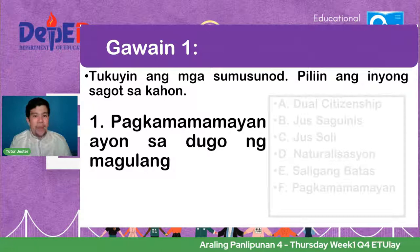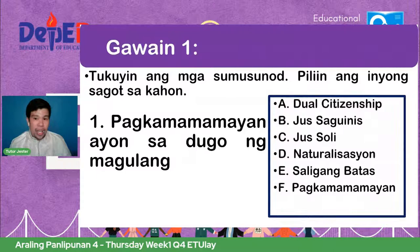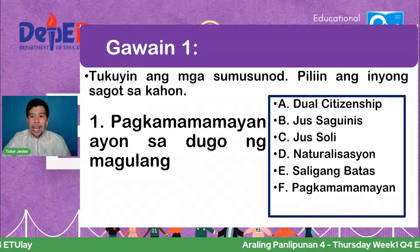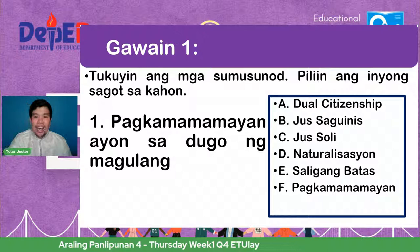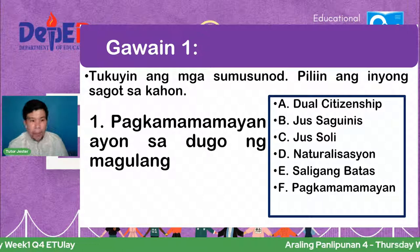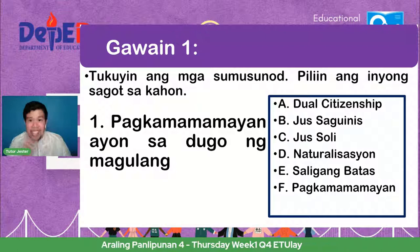Gawain 1: Tukuyin ang mga sumusunod. Piliin ang inyong sagot sa kahon. Ang ating mga pagpipilian ay: A — dual citizenship; B — jus sanguinis; C — jus soli; D — naturalisasyon; E — saligang batas; F — pagkamamamayan. Number one: pagkamamamayan ayon sa dugo ng magulang.